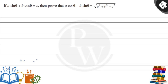Hello, let's see this question. The question says that if a sinθ + b cosθ equals c, then prove that a cosθ - b sinθ equals square root of a² + b² - c².